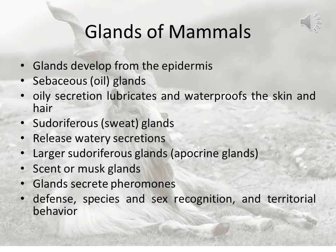Scent or musk glands are found around the face, feet or anus of many mammals. These glands create pheromones which may be involved with defense, species and sex recognition, and territorial behavior.